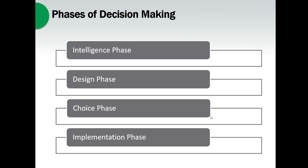Those are the kinds of things we want these systems to help with. In any decision-making process - especially when trying to determine what to computerize - there are certain phases. In the intelligent phase, we have to learn about the business we're in. Once we understand that, we can design some kind of system to help us, narrow down several choices, and then decide whether to implement them.